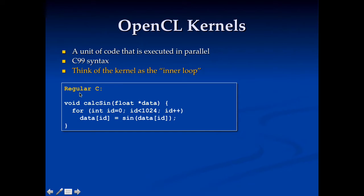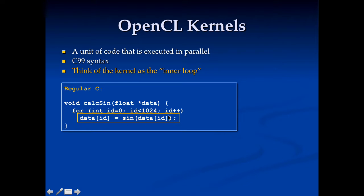Let's look at an example of a regular C function. Here I've got a function called calculate_sine. It takes in some data, iterates over that data, and for each piece of the data, it calculates the sine of that piece. If we want to execute this in parallel, we're going to do the sine calculation for each element — a lot of those — in parallel.